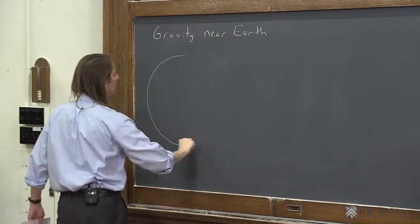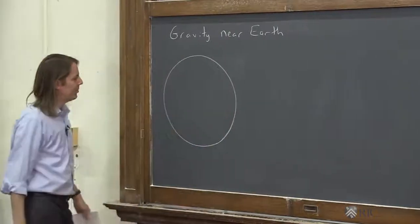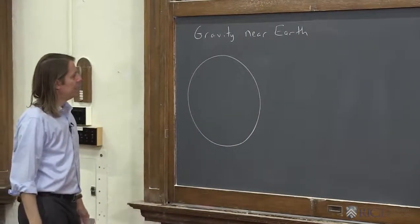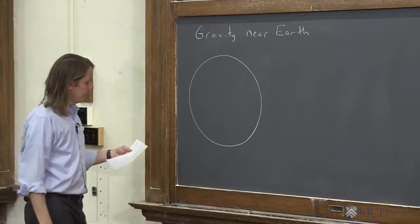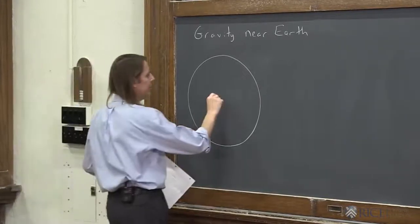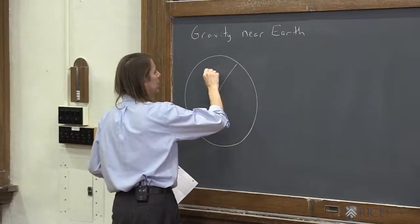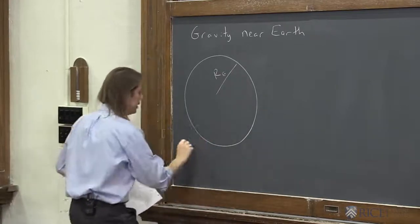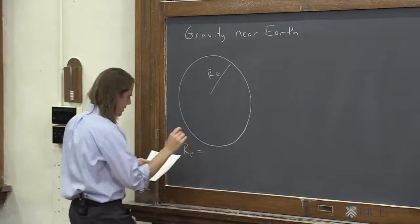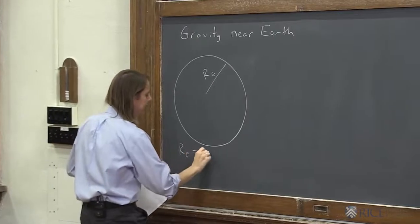Here's the Earth yet again. I'm not drawing the continents because I'm really bad at it. Now, the radius of the Earth is here. Re. And the radius of the Earth is very big, 6.37 times 10 to the 6 meters.